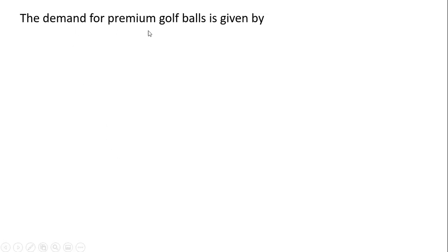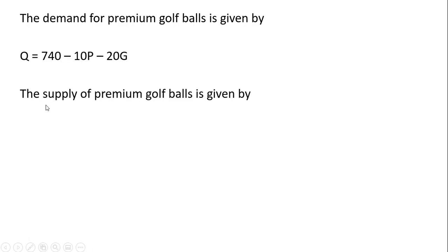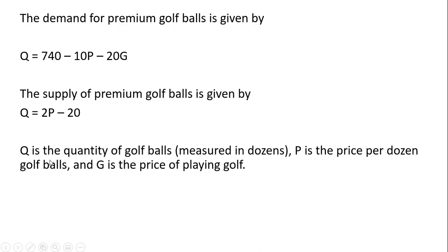We're going to look at the demand for premium golf balls, which is given by the following equation. The supply of premium golf balls is given by the following. Q is the quantity of golf balls measured in dozens, P is the price per dozen golf balls, and G is the price of playing a round of golf. We're going to let G, the price of playing golf, equal $20.